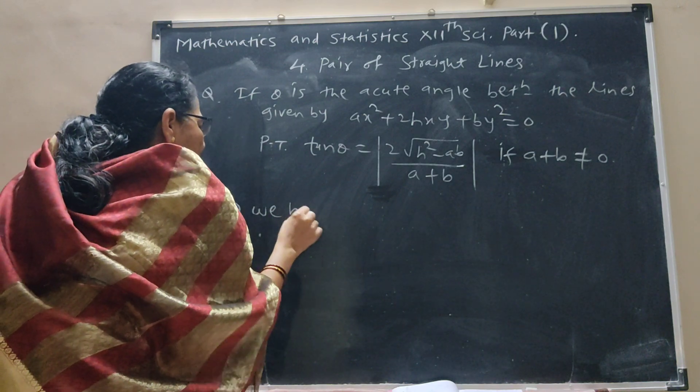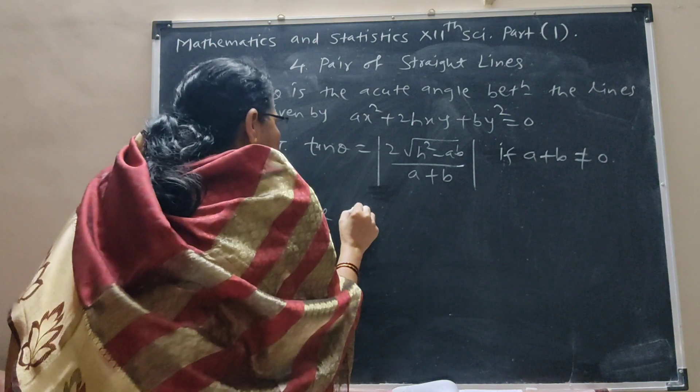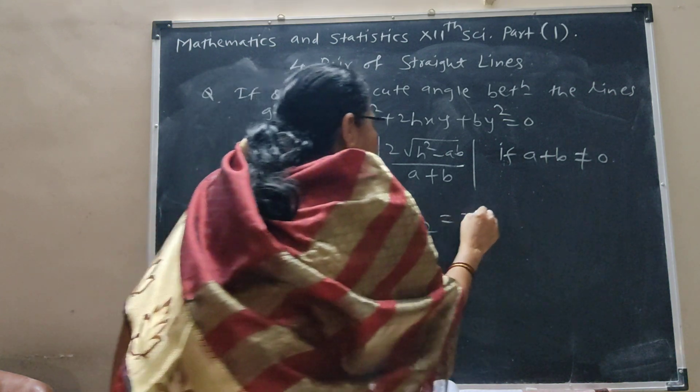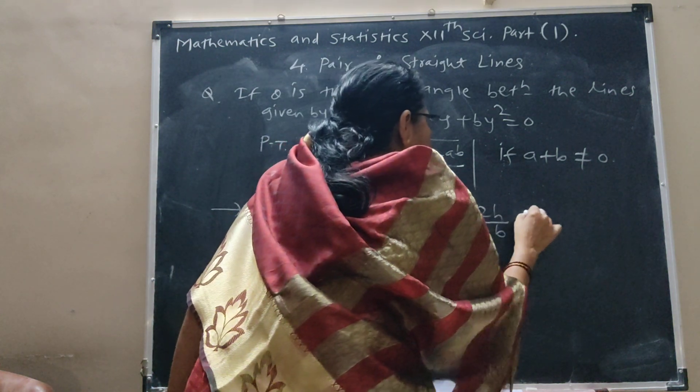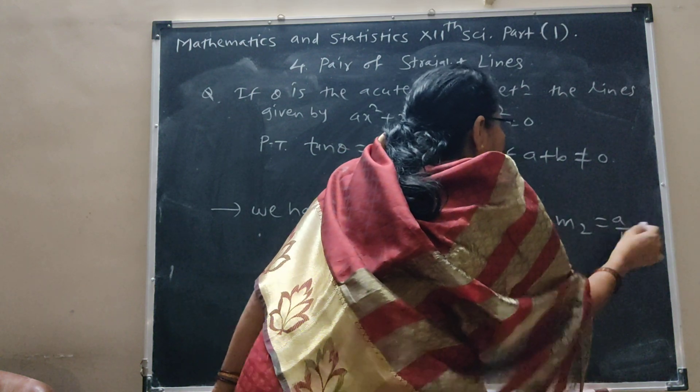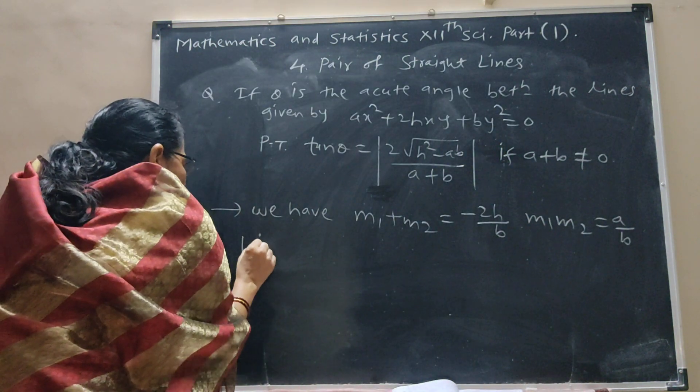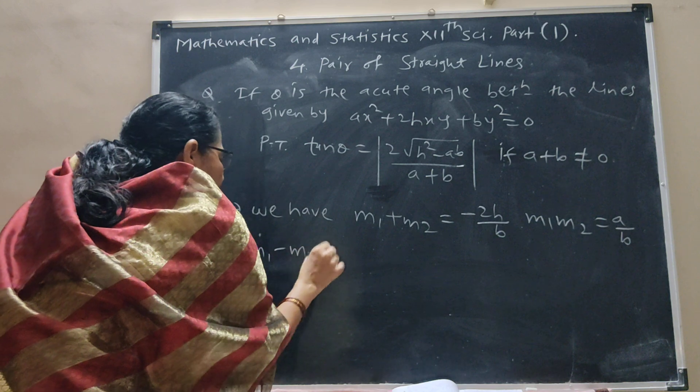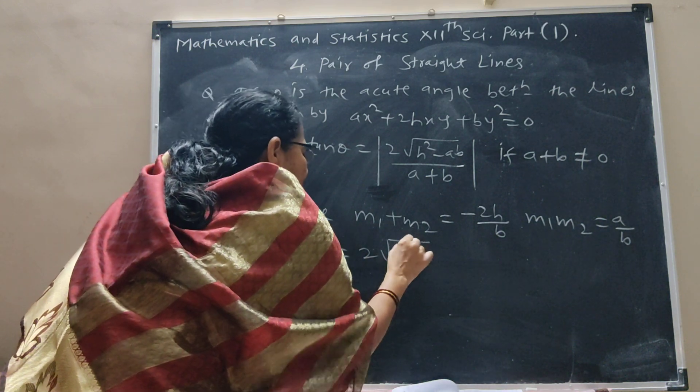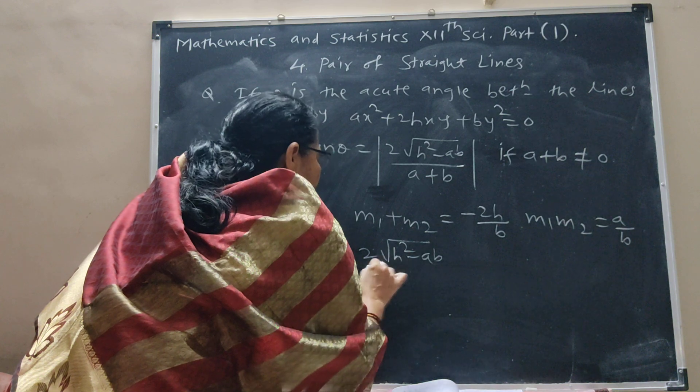We have m1 plus m2 is equal to minus 2h upon b, m1 m2 is equal to a upon b, m1 minus m2 is equal to 2 root h square minus ab upon b.